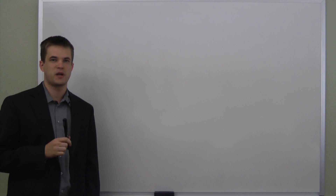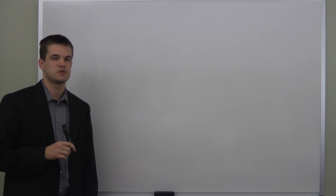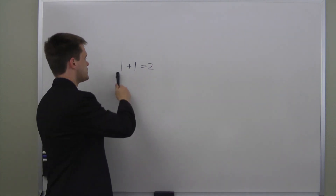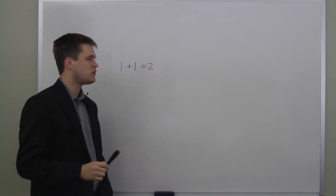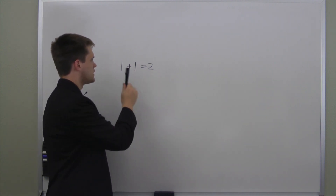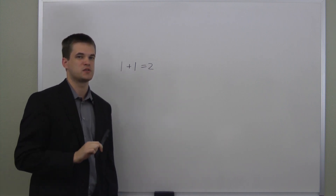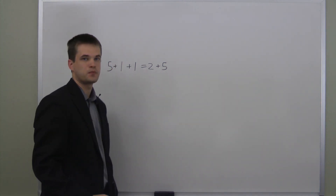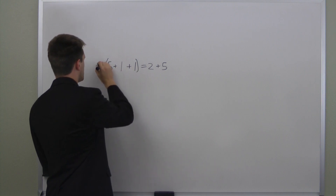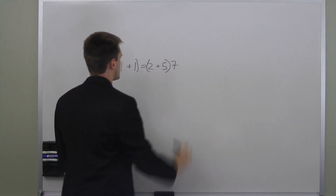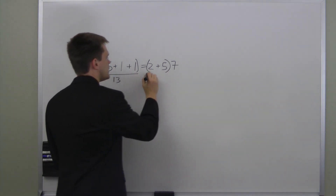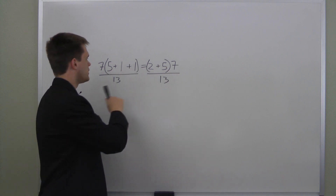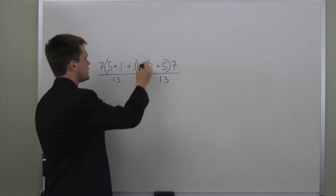An equation consists of two mathematical expressions separated by an equal sign. For instance, one plus one equals two — this is true because both sides have the same value. The beauty of equations is that you can perform any operations the same way on both sides, and the equation remains true. We can add five to both sides, multiply both sides by seven, or divide both sides by thirteen, and the equation is still true.